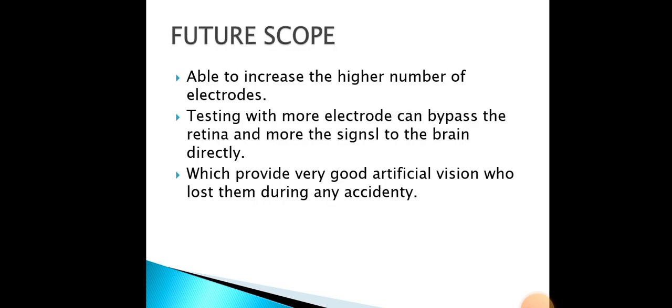Next, the future scope. In the future, we will be able to increase the number of electrodes to produce sharper, colored, and more functional vision for blind individuals. Testing with more electrodes can bypass the retina and move signals directly to the brain. Researchers and engineers are working together to increase the number of electrodes to develop advanced prosthetics that can provide very good artificial vision and help people during accidents.